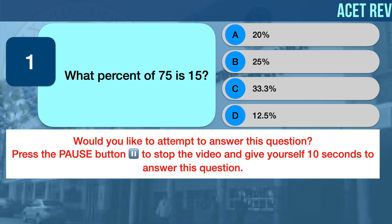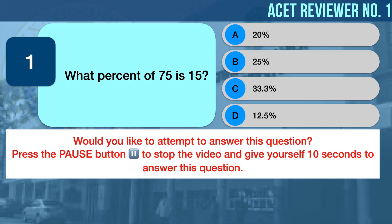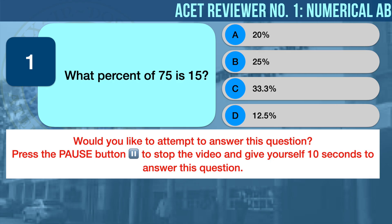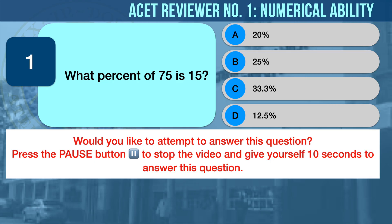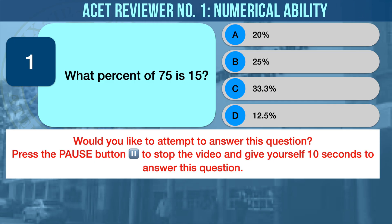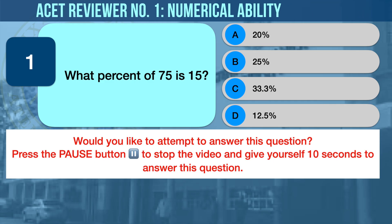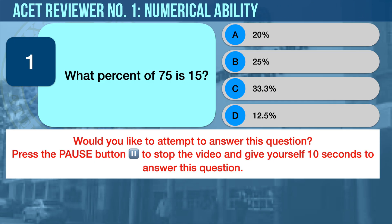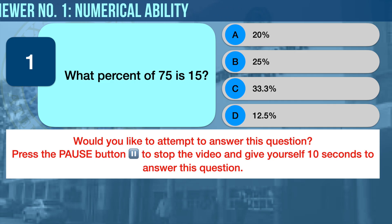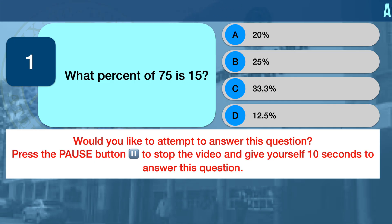Numerical Ability Problem Number One: Decimals, Percentages, and Fractions. What percent of 75 is 15? A) 20 percent, B) 25 percent, C) 33.3 percent, D) 12.5 percent.